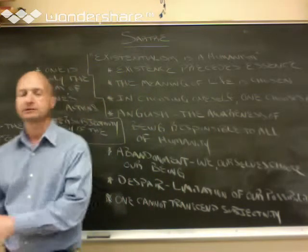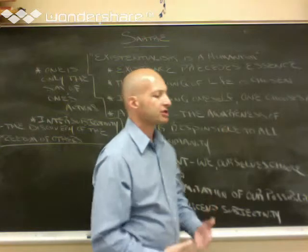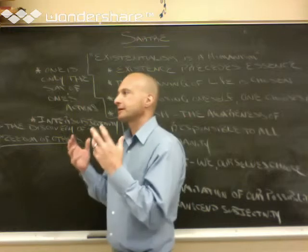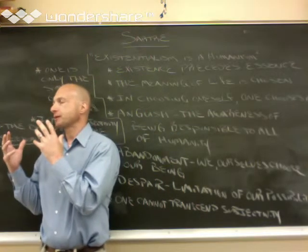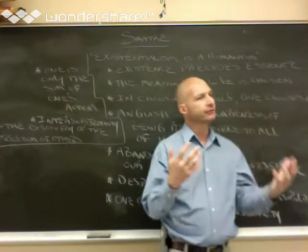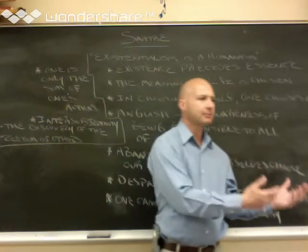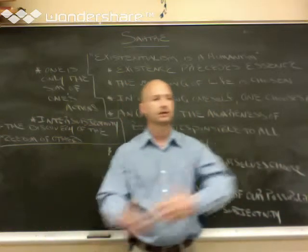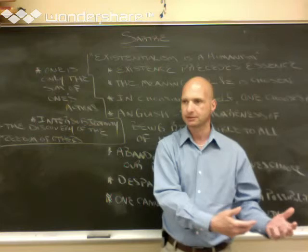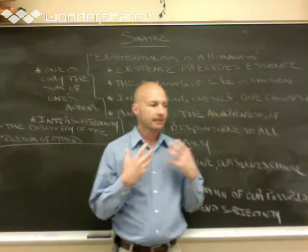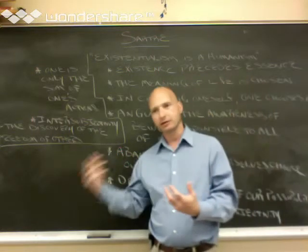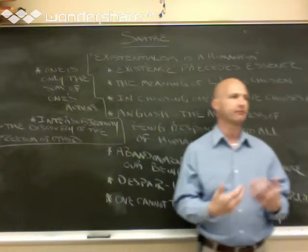Now, this is Kierkegaard. Kierkegaard urges us to become subjective. Because we can approach truth from two different perspectives, what he calls the objective and the subjective. As an objective inquirer, like a scientist, the most I can ever achieve, according to Kierkegaard, is an approximation of the way things are.